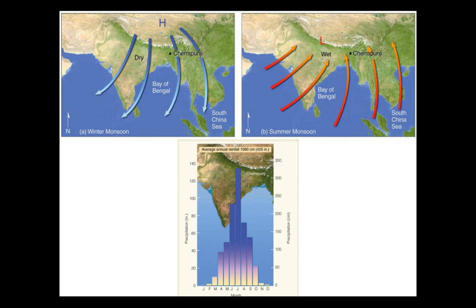Some thermal circulations extend over much larger areas than local sea and land breezes — for example, the monsoon. Monsoon winds change direction on a seasonal time scale. There is a large, well-developed monsoon system in eastern and southern Asia. In the winter, the air over the continent becomes colder than the air over the open water. A large, shallow, high-pressure area forms over the continent. Air subsides and blows offshore to the warmer ocean water, similar in large scale to the land breezes discussed earlier.